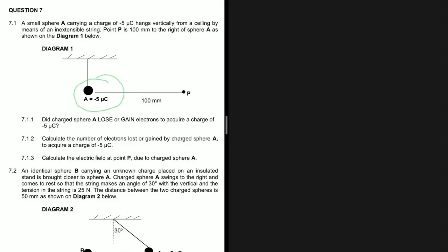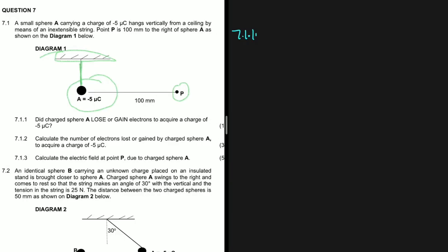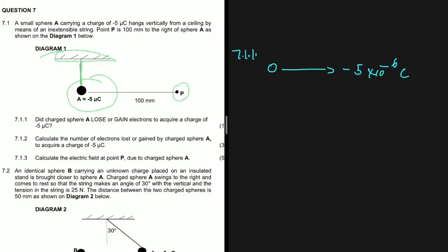We have a sphere A with a charge of minus five microcoulombs hanging from a ceiling by means of a light inextensible string, and then 100 millimeters away we have a point charge P. Question 7.1.1 asks: did sphere A lose or gain electrons to acquire a charge of minus five microcoulombs? If a sphere was neutral and now has a charge of minus five microcoulombs, we know that electrons are negatively charged, so if it becomes more negatively charged, it gained electrons.